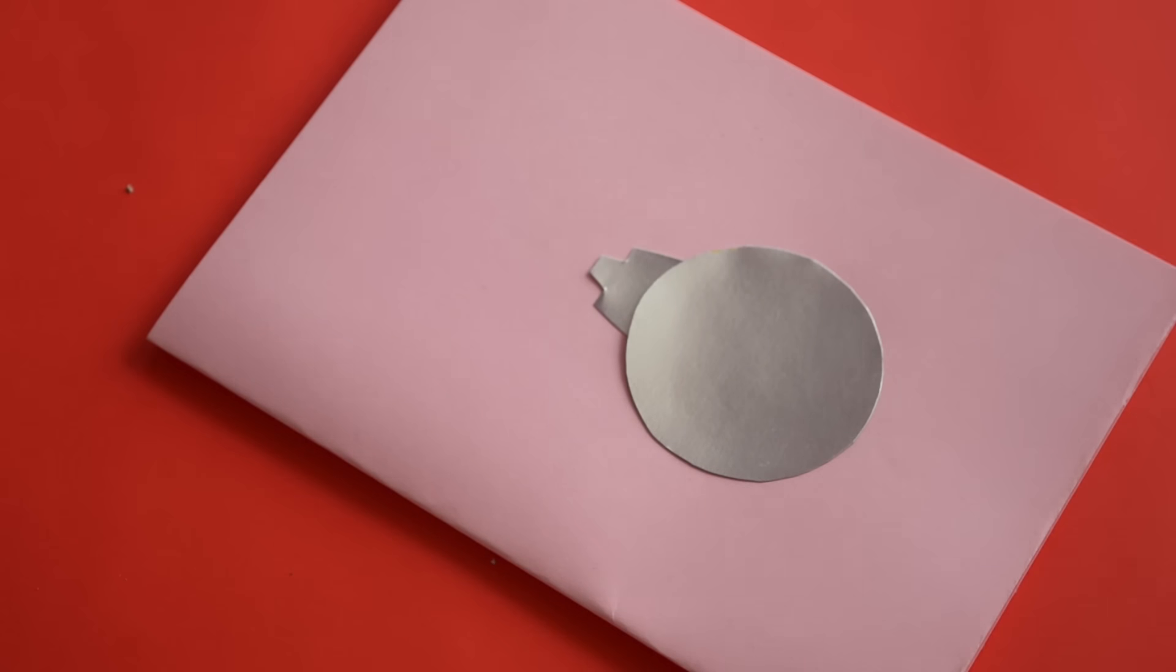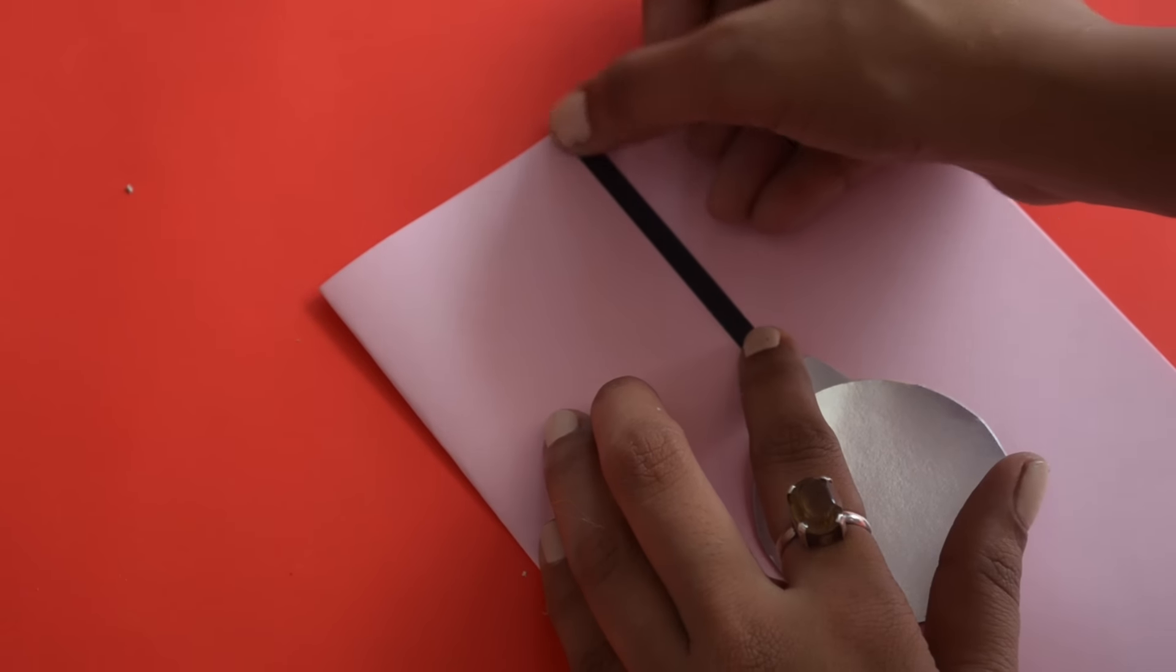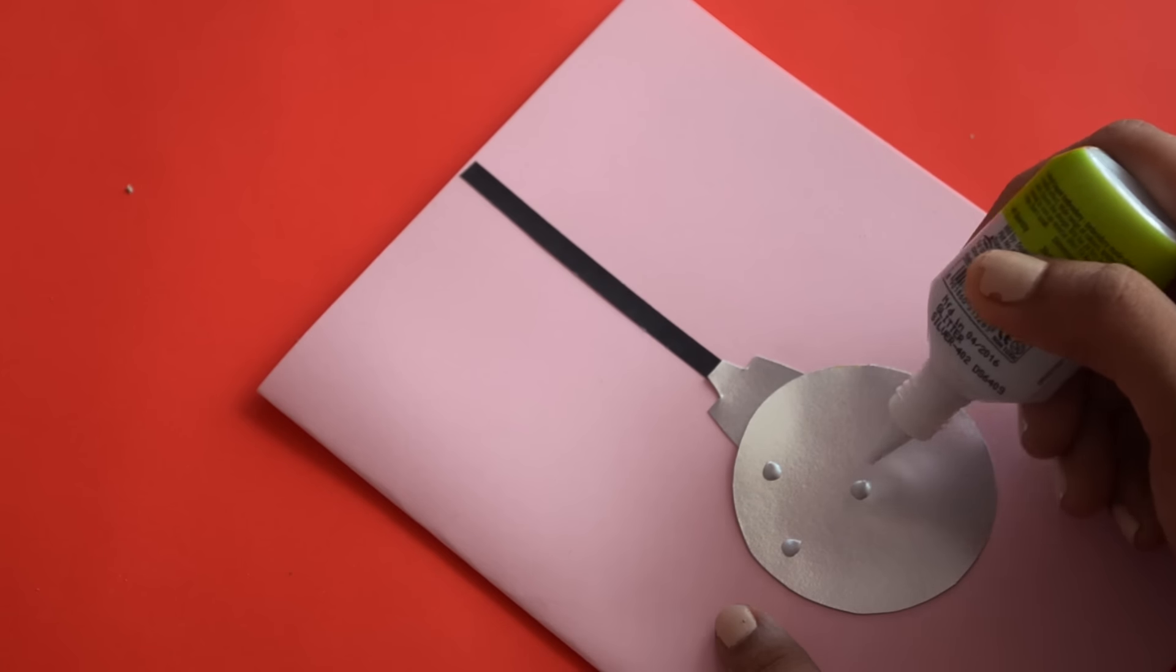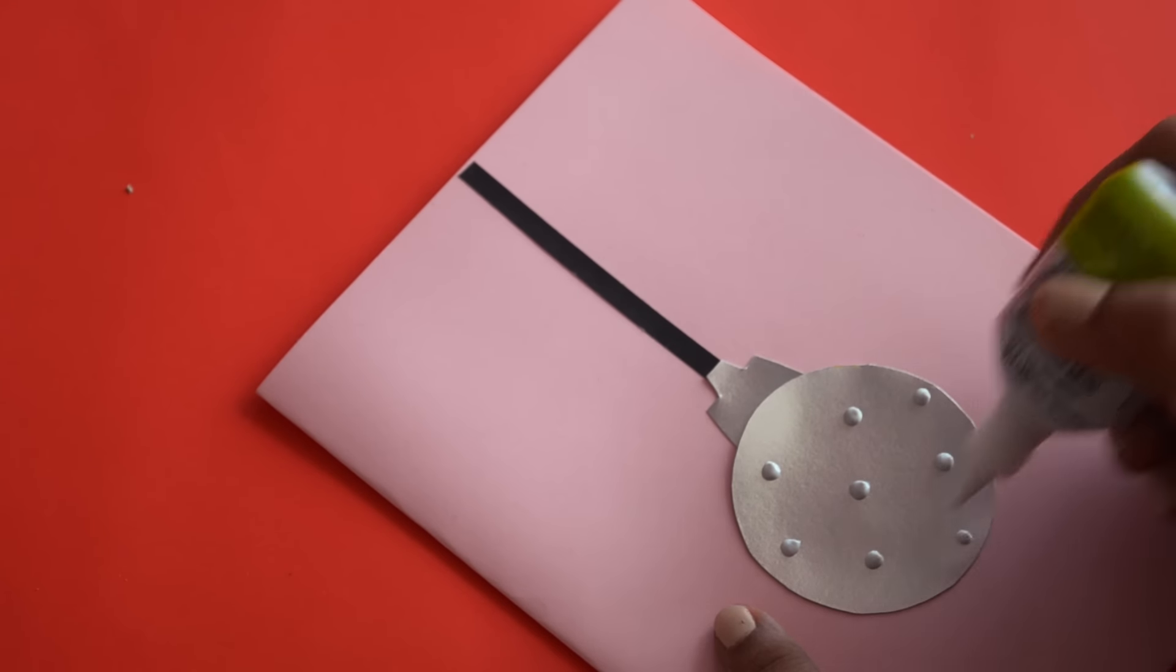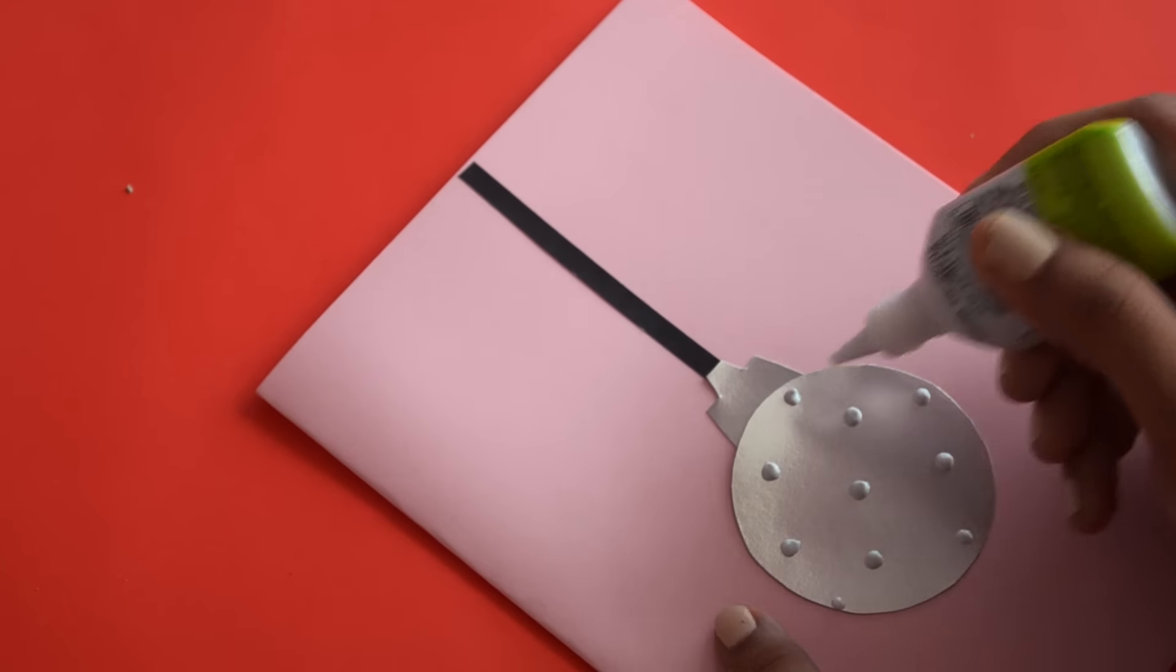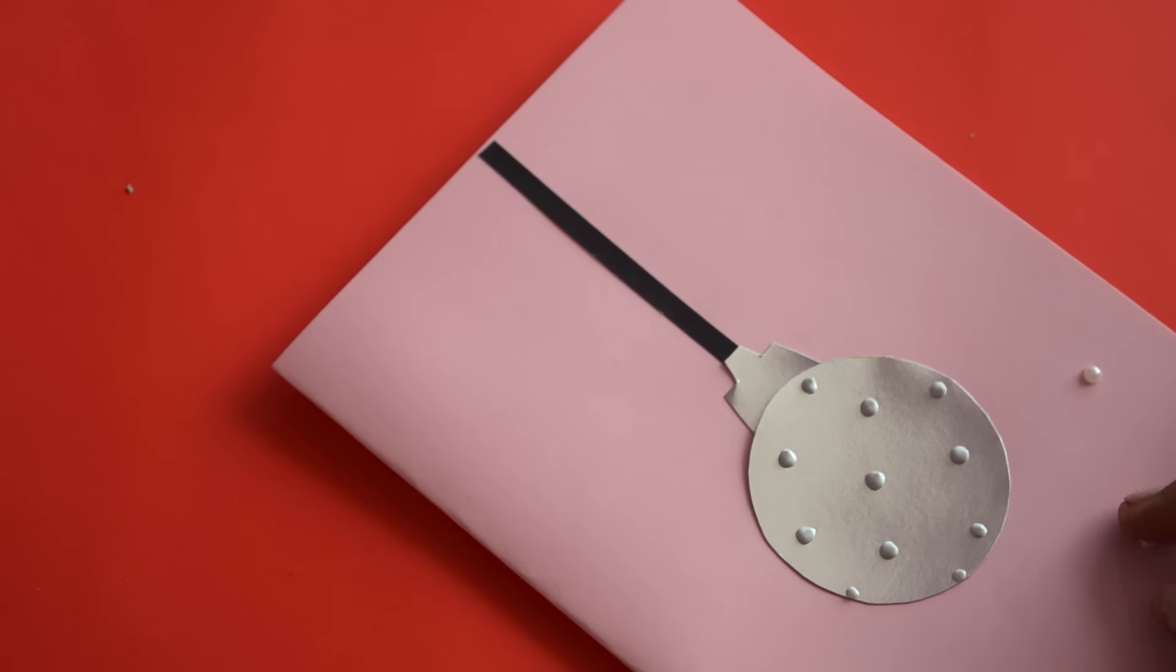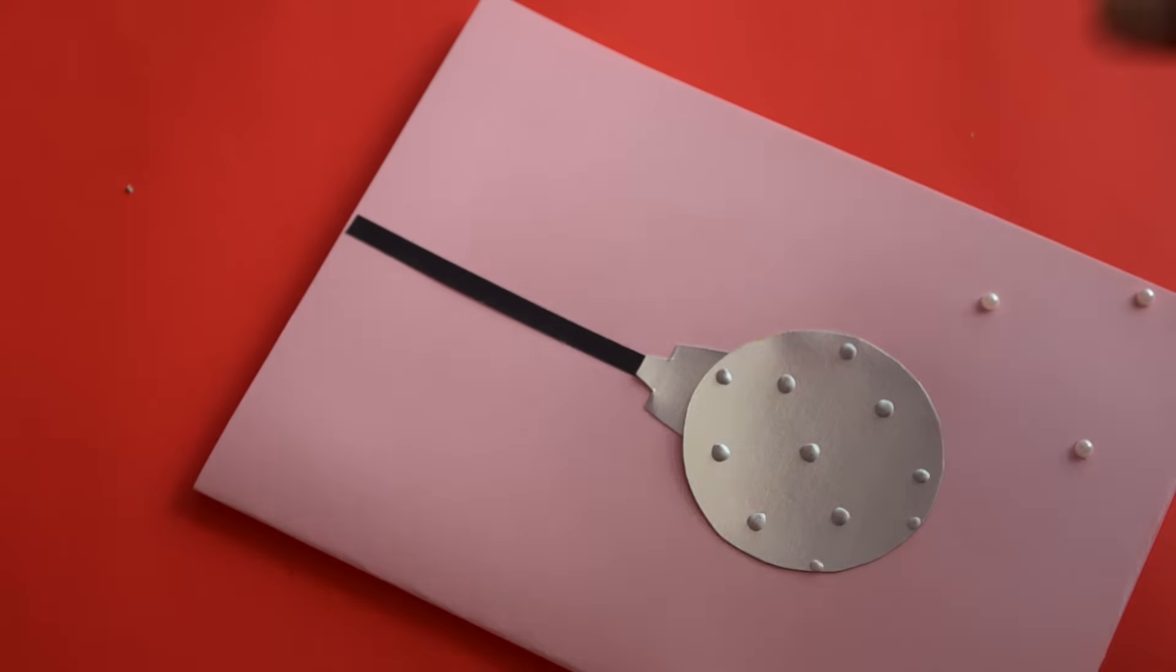For the fourth card, I used a pink card paper and cut out a circle from a silver card paper and stuck it like so on the card. For the string of the ornament, I used a black card paper. Then I decorated the card with glitter and some flat pearls and finished it off with some lettering.